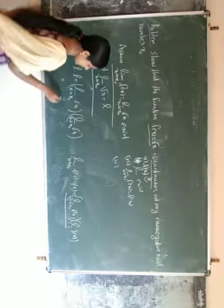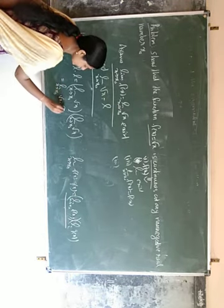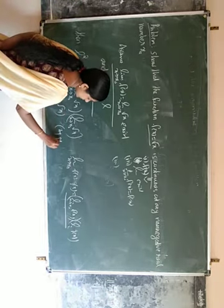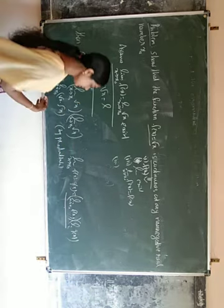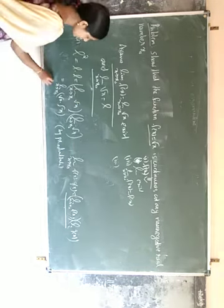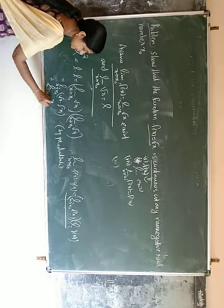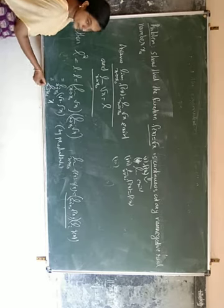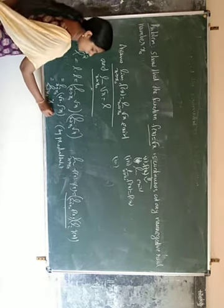By product rule, root x into x. So limit x tends to x₀ of x. Limit x tends to x₀ of x. By basic property, limit x tends to x₀ of x equals x₀.